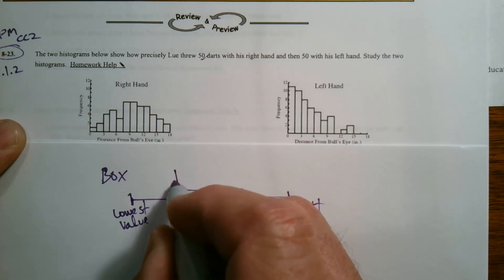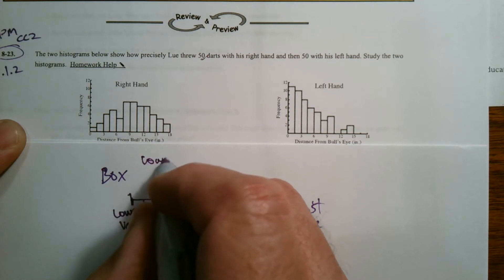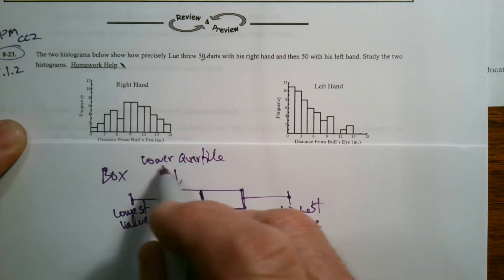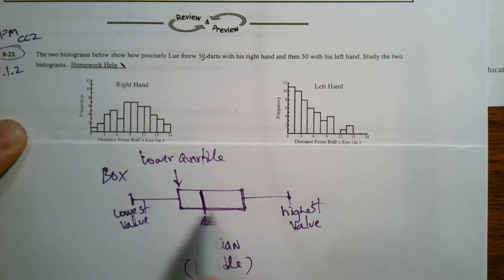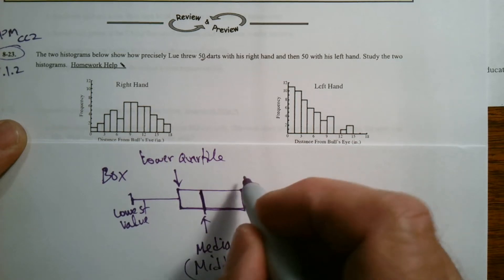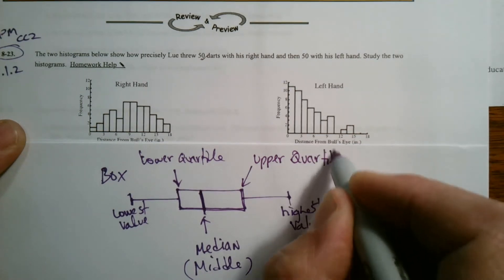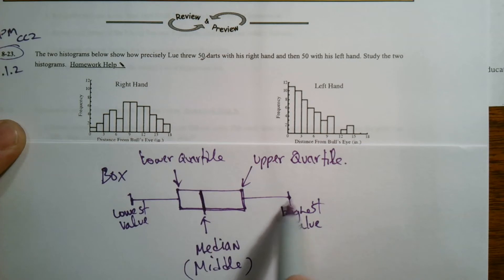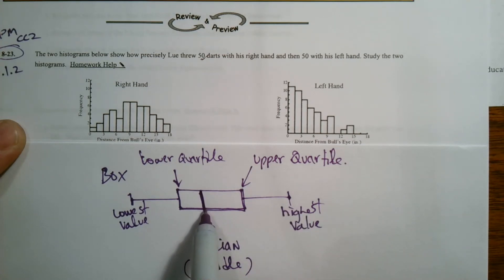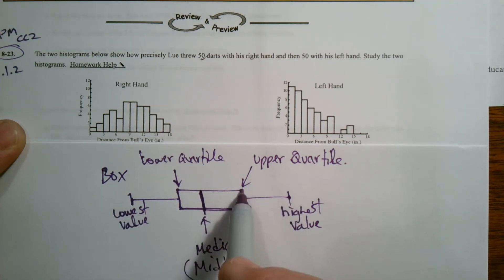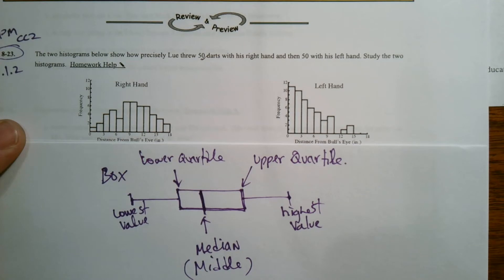Then this number here is your lower quartile. How do you find your lower quartile? It's the middle of the bottom half of the numbers — you count up and down until you get the middle of the bottom half. And then that right there would be your upper quartile. Your upper quartile is the middle of the upper half of numbers. Take the median, and then the rest of the numbers up and the rest of the numbers down are your upper and lower halves. You find your upper quartile by finding the middle of those numbers. So that's a reminder of how a box plot is created.